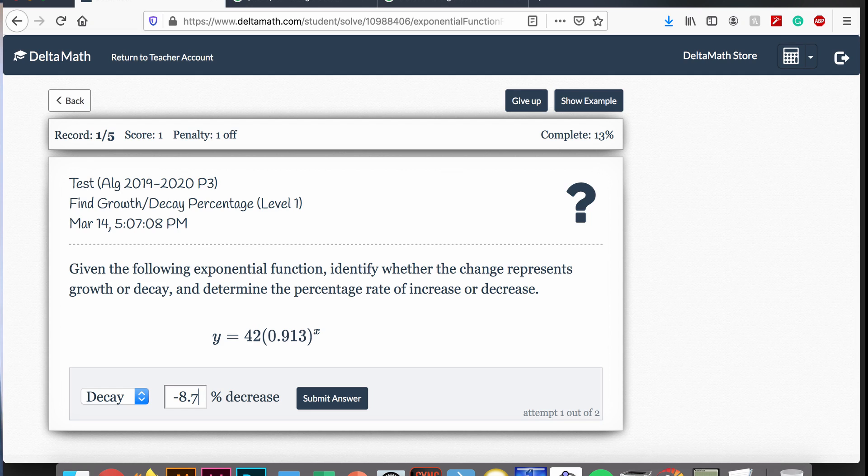This is how you complete the find growth slash decay percentage part of the DeltaMath assignment. The text gives us: given the following exponential function, identify whether the change represents growth or decay, and determine the percentage rate of increase or decrease.